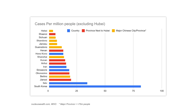One argument in favor of that view: this graph from Nucleus Wealth shows significant underreporting of cases in most Chinese provinces and in places like Iran. The bars depict reported COVID-19 cases per million inhabitants. South Korea, which has done the most extensive testing, reports around 80 cases per million. The Chinese provinces are far lower than they should be, especially those next to Hubei where the outbreak started. We will only be able to tell the true case fatality rate once we measure antibodies in the general population.